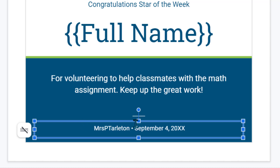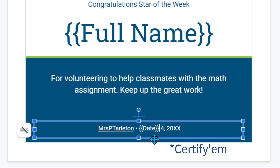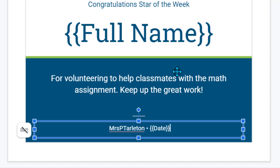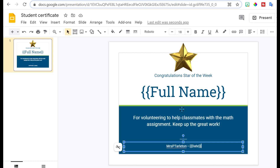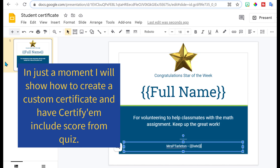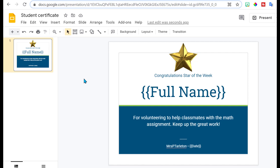Down here where it says school name I'm going to delete that and just put my name. For the date, you want to do the same thing: if you put the two curly brackets, the word 'date,' Certify Them will automatically put whatever the current date is in that spot. If you want to add more elements that you're going to ask on the Google Form you may do that as well — if this is for being successful on a test or a quiz you may want to do something different. That's how you can use this plain, basic, simple certificate in Certify Them.